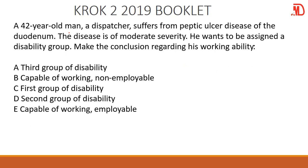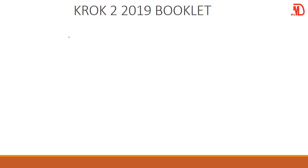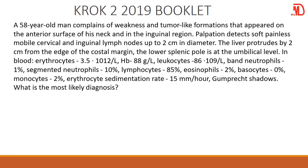So now we have a 42-year-old man, a dispatcher, who suffers from peptic ulcer disease of the duodenum. The disease is of moderate severity and he wants to be assigned a disability group. Well, the person is suffering from peptic ulcer and from the indication the person has not yet developed any complication, because it is of moderate severity. This means that this person is capable of working and can be employed. So your answer should be capable of working and employable.